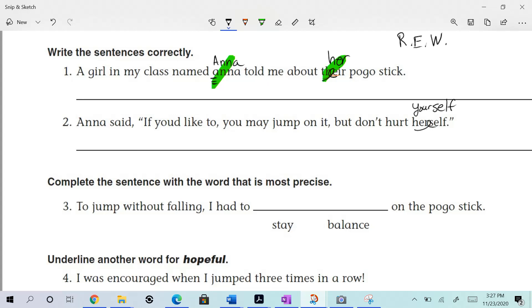Now we are doing a contraction here. You do Y-O-U-D - does that look right to you? What do you need when you're contracting you and would? We're bringing these together and we need something to do that. We need it right here. It's going to be an apostrophe. Anna said, comma, if you'd like to, you may jump on it, but don't hurt yourself. Right, yes, I think we're good now. Again, two mistakes on that one.